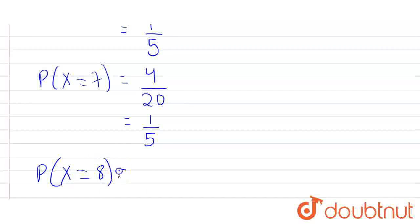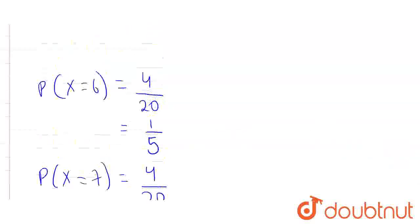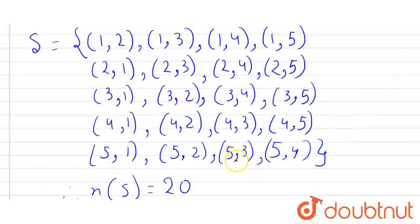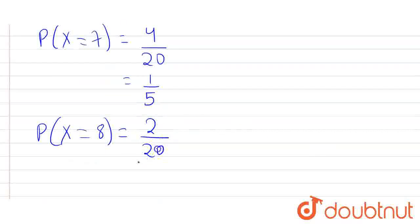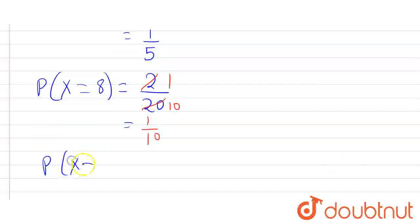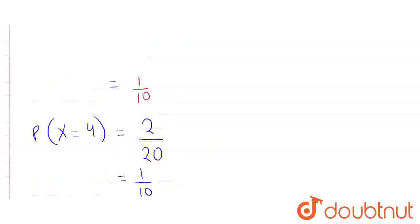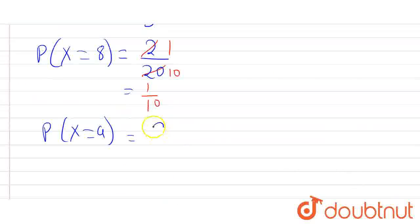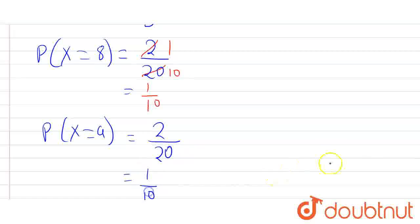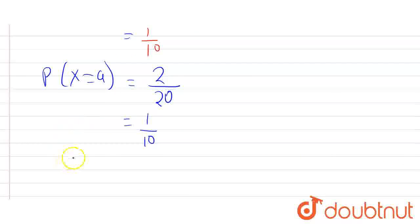Probability that X equals 8: there are 2 cases whose sum is 8, so P(X=8) = 2/20 = 1/10. Probability that X equals 9: there are also 2 cases whose sum is 9, so P(X=9) = 2/20 = 1/10.